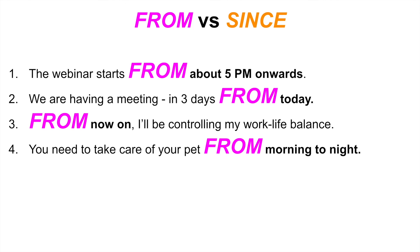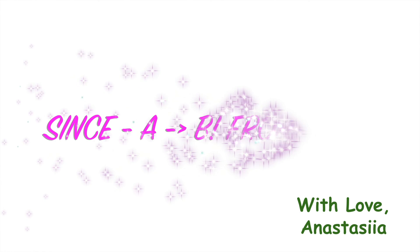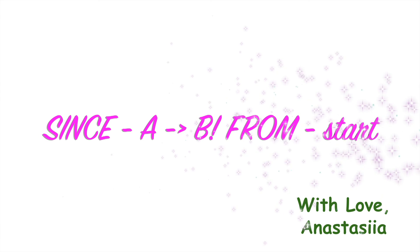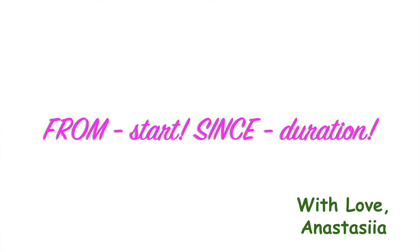'You need to take care of your pet from morning to night' — here I show some kind of duration but this is a set expression like 'from nine to five', showing the starting position morning and the end position night. After 'from' I need to use a start point in the form of a noun, time, or set expression. I hope you understand the difference: if it's just the start position, use 'from'; if it's not only the start position but the duration from start to end point, use 'since'. Thank you for watching!